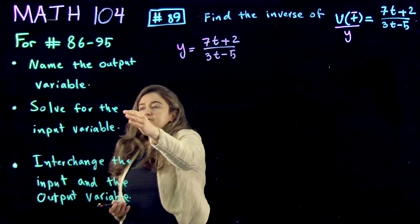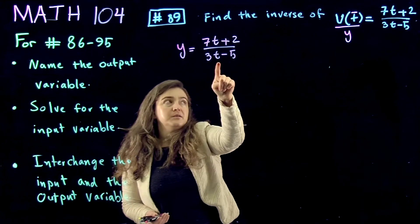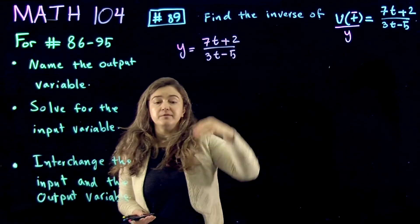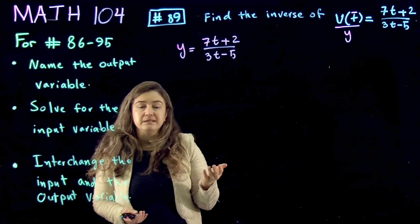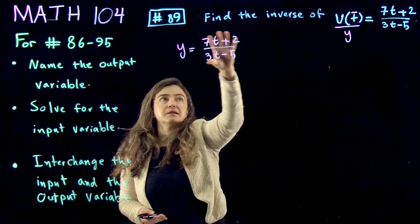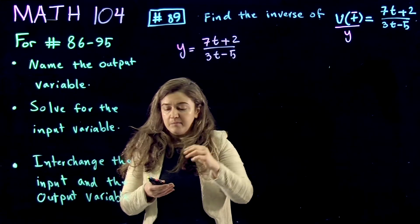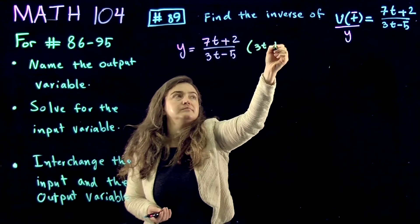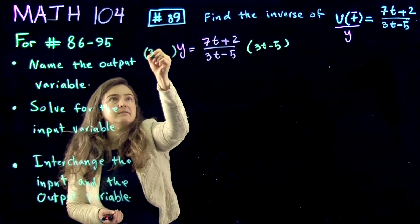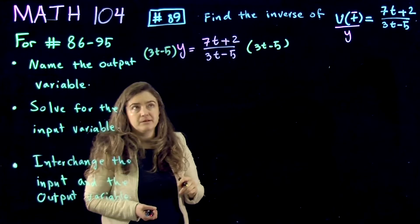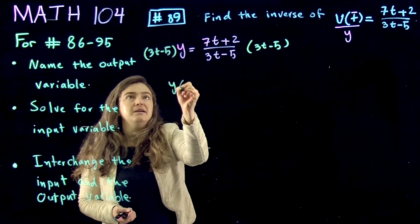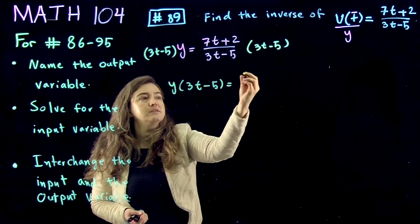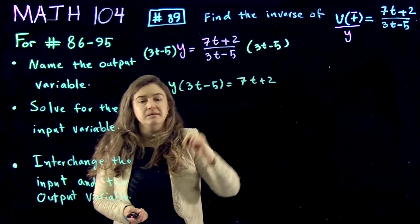The next step is to solve for the input variable t. Solving for the input variable of this type of equation involves isolating t first. The first thing you want to do is multiply both sides by the denominator to get rid of the denominator. What we get is y times (3t minus 5) equals 7t plus 2.